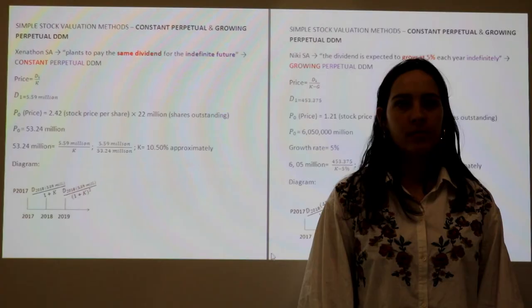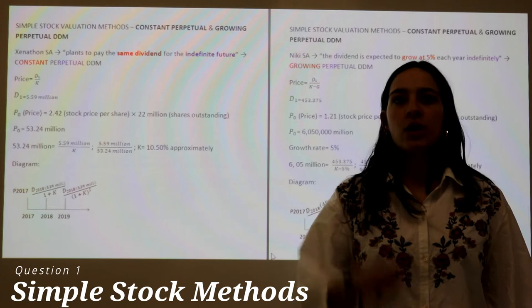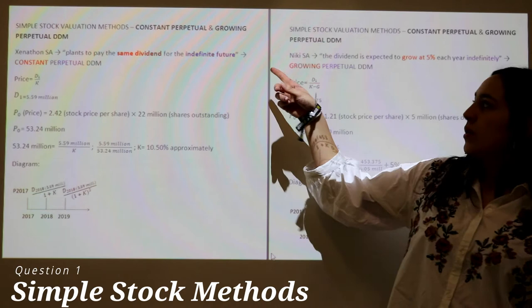We will meet in a few days. To find Papayanis' approximate return on equity, we compared it with two other companies. To do so, we used two different stock valuation methods. To calculate Senator's rate, we used a constant perpetual DDM, which resulted in an approximately 10.50% interest rate.